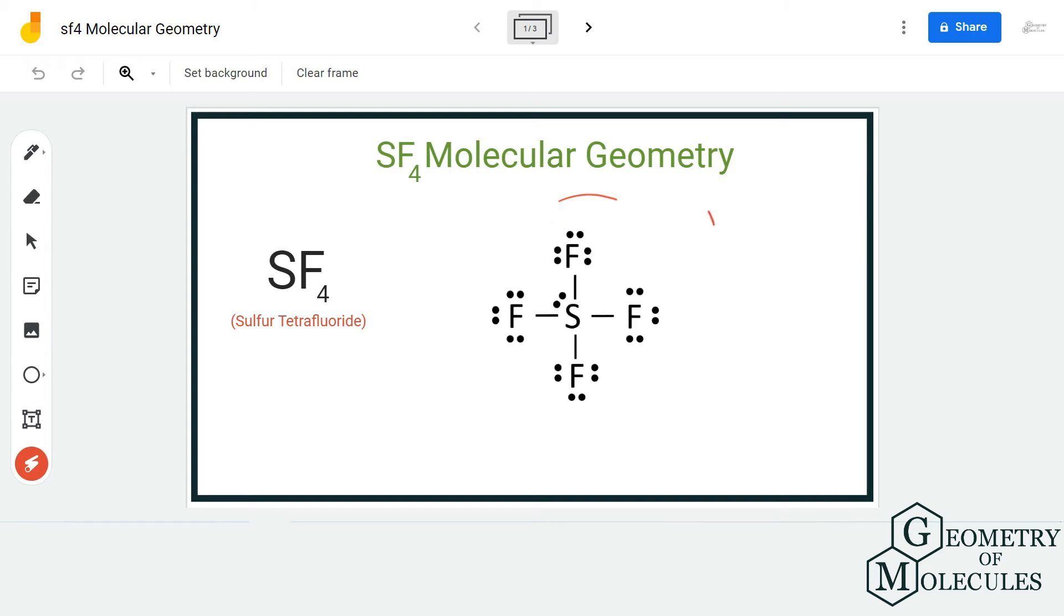At first sight, this molecule might appear tetrahedral because of the four atoms bonding to the central atom. But let's not forget about the lone pair of electrons present on the sulfur atom. Remember to consider everything when looking at molecular geometry because lone pairs play a major role in the shape of the molecule. This might seem like a tetrahedral structure, but if you look at the 3D structure, it's somewhat different.